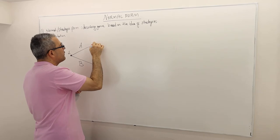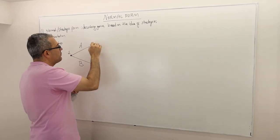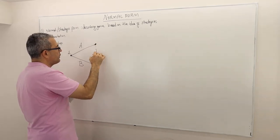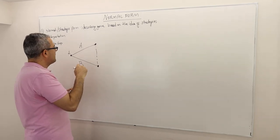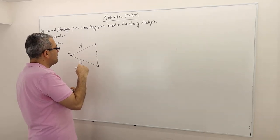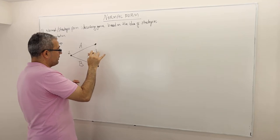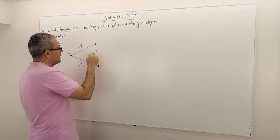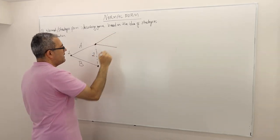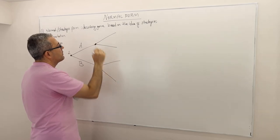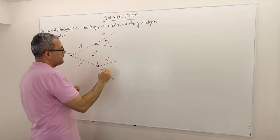Player two moves second, but player two cannot observe player one's actions. This is the second player's information set, and he has two potential actions: C and D, C and D.